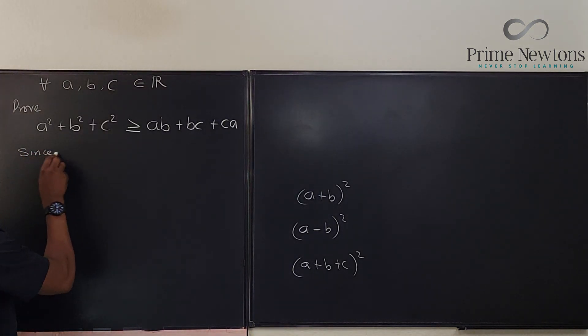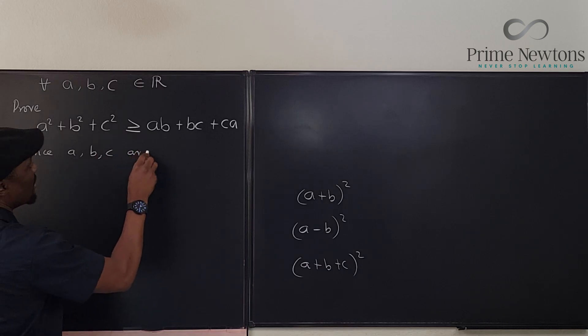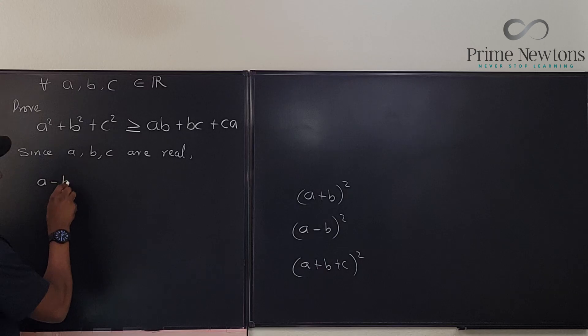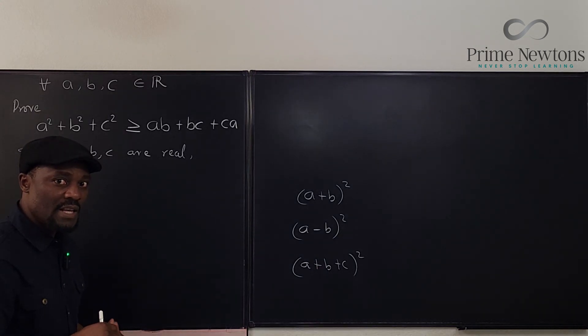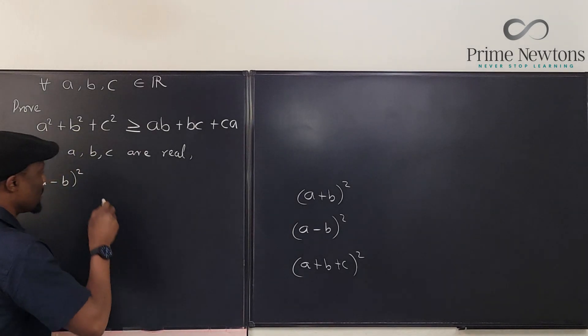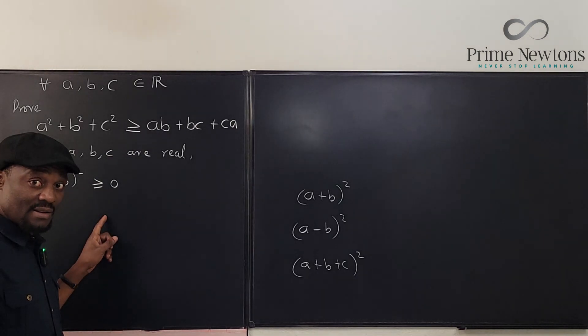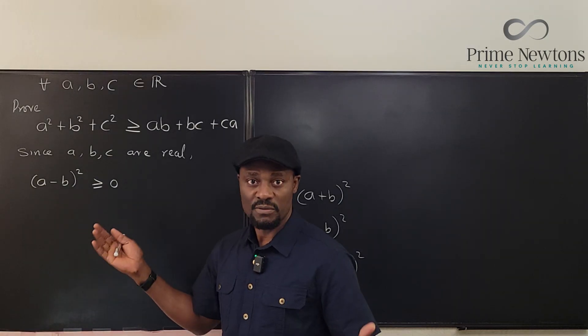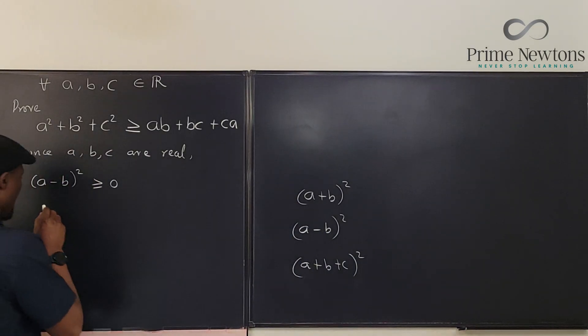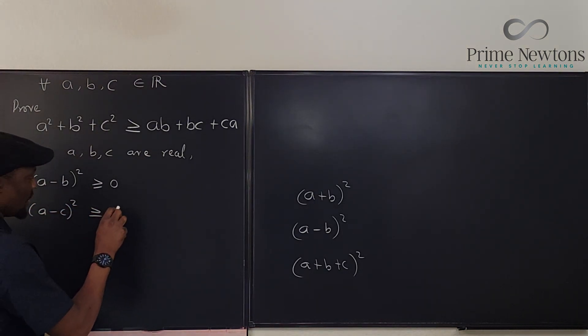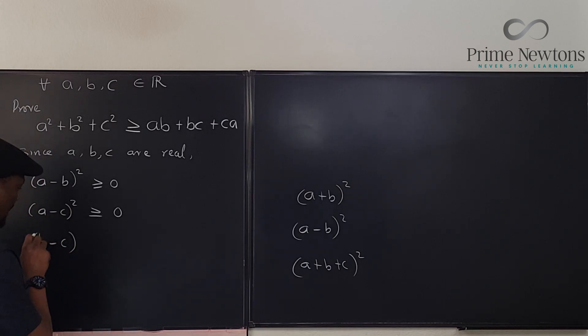Since A, B, C are real, we know that A minus B squared is greater than or equal to zero. That one is obvious. So I'm just going to write a combination of all three. So we have A minus C squared is greater than or equal to zero, and B minus C squared is greater than or equal to zero.